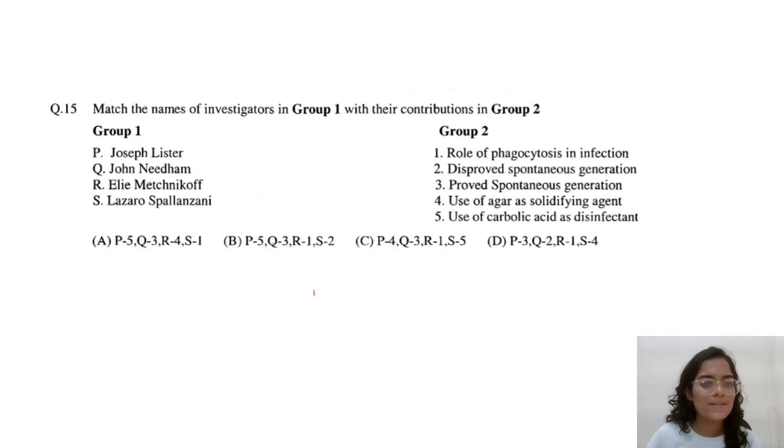Next, match the names of investigators in group 1 with their contributions in group 2. Joseph Lister, antiseptics, disinfectants, carbolic acid. John Needham, he proved the spontaneous generation. And Elie Metchnikoff, phagocytosis, role of phagocytosis in infection was told by Elie Metchnikoff.